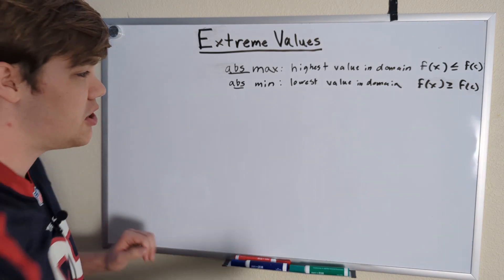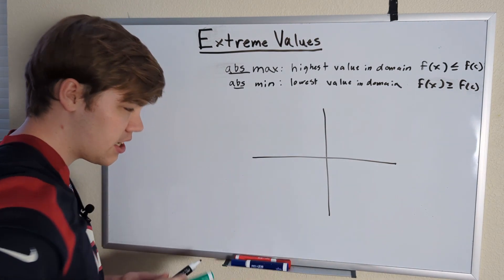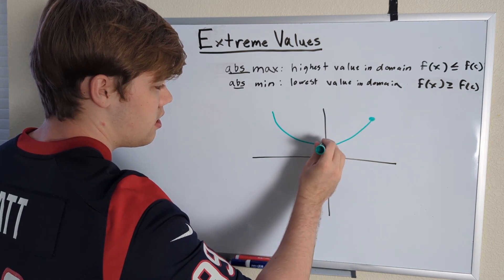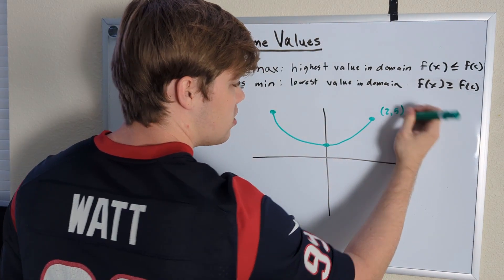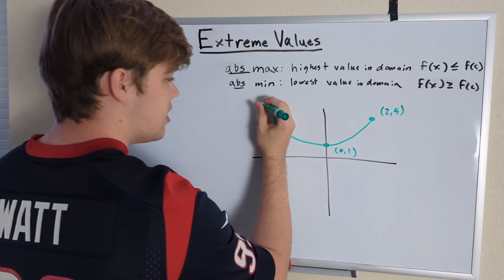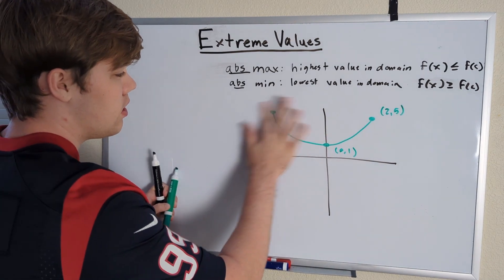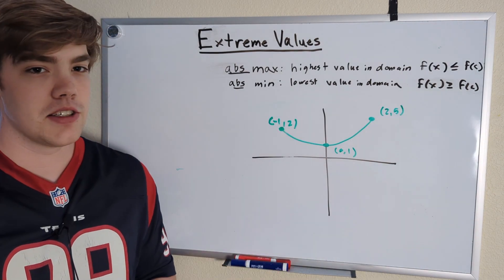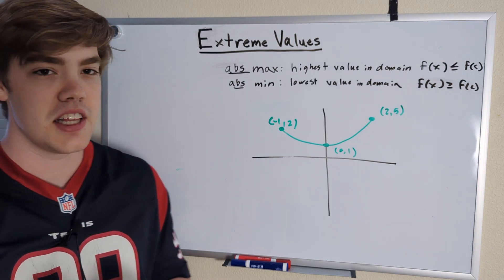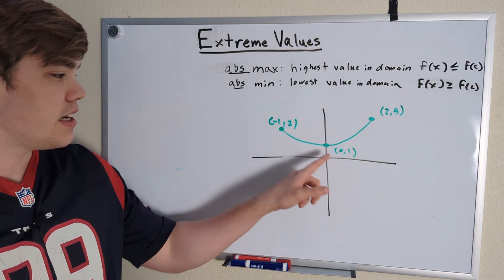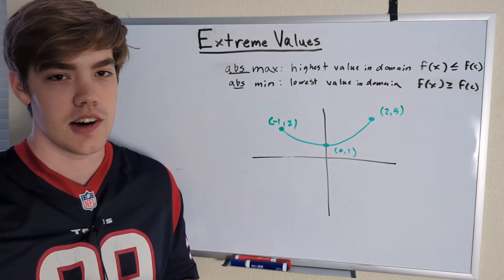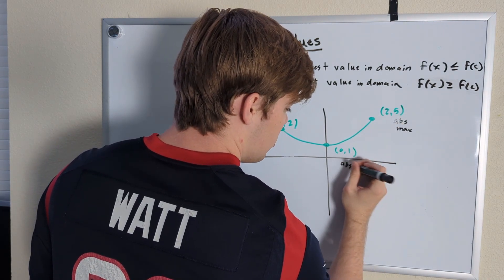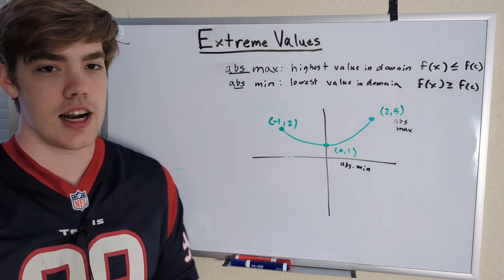Let's draw a graph to make this a little bit easier visually. Here we just have a regular xy plane, and let's get green out to draw this graph. We're going to draw a simple parabola-looking curve. I'm going to mark three points on here: (2, 5), (0, 1), and (-1, 2). In this graph, (2, 5) is our absolute maximum — it has the highest y-value. And our absolute minimum is (0, 1) — it has the lowest y-value. So let's label that: absolute max and absolute min.